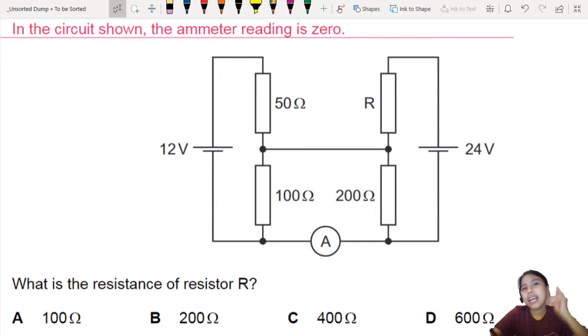This is what I call a level 2 circuit. Kind of a bit of tricky stuff here. Ammeter reading is zero.